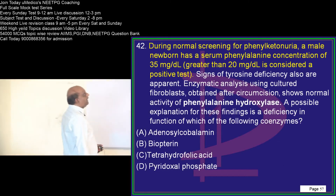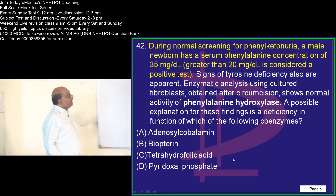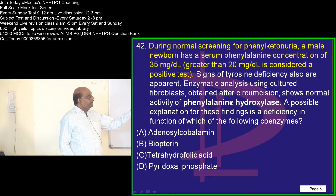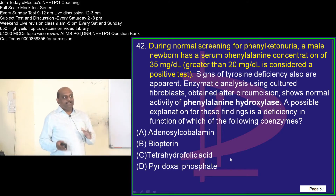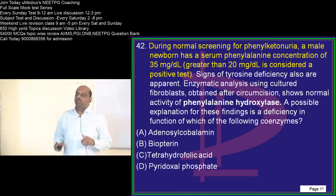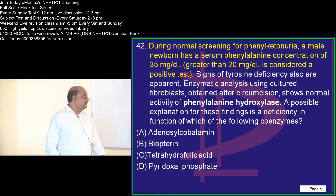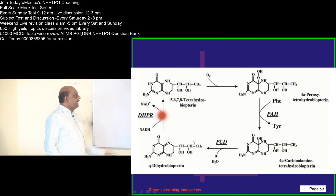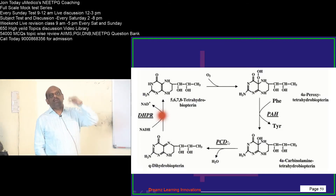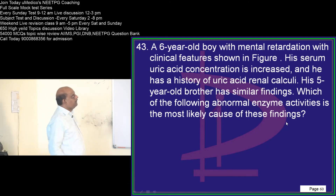During a normal screening for phenylketonuria, a male newborn has a phenylalanine level of only 35. For the phenylalanine hydroxylase enzyme, what is the important coenzyme? It is biopterin, which is considered the important coenzyme for phenylalanine hydroxylase.